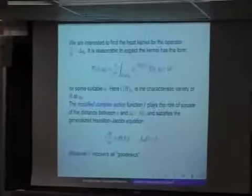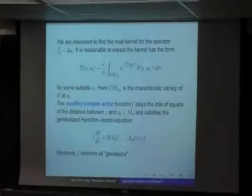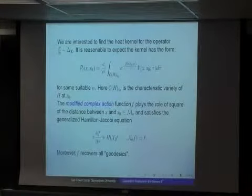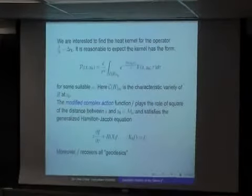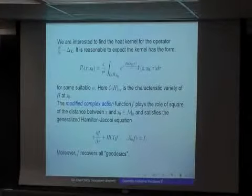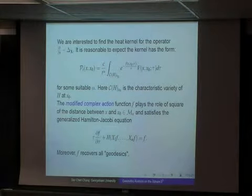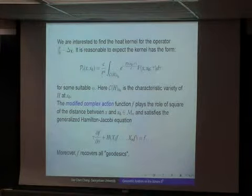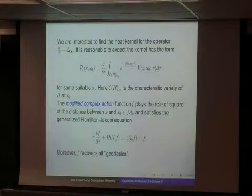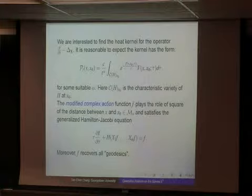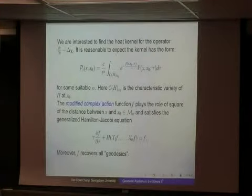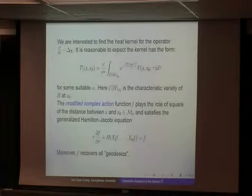I'm very interested in finding the heat kernel. It's reasonable to expect the heat kernel has the form: a constant divided by t to the alpha, where alpha is a suitable number that depends on how many missing directions and the homogeneous degree. Also I have e to the minus F over t, where F is the square of the distance, something like x minus x0 squared. Then of course, I want to integrate this kernel along the characteristic variety.